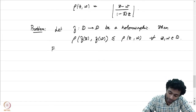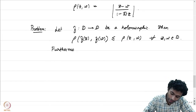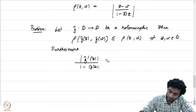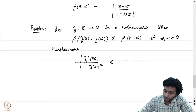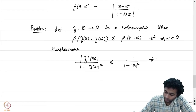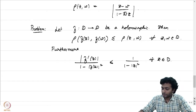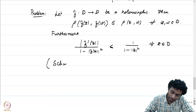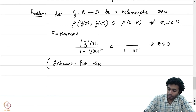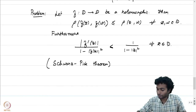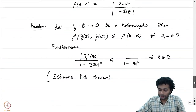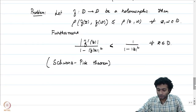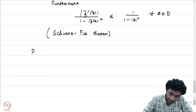Furthermore, |f'(z)| / (1 − |f(z)|²) ≤ 1 / (1 − |z|²) for all z in the unit disk. This is the Schwarz-Pick theorem, which you will certainly encounter later when you study hyperbolic geometry and the hyperbolic distance.